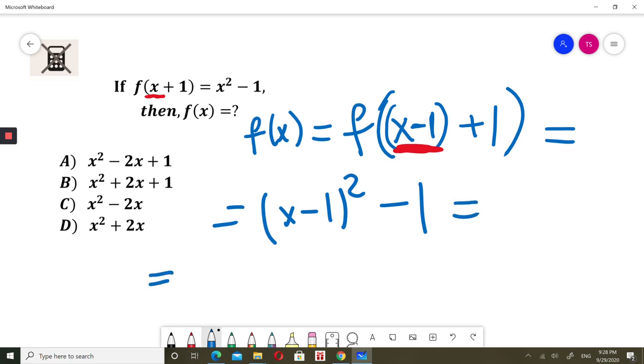Now I can just continue this. x minus 1 squared, I will do it very quickly: x squared minus 2 times x times 1, which is minus 2x, plus 1. You could write two brackets, x minus 1 times x minus 1, if you are confused. Then I have just minus 1. So the answer will be x squared minus 2x.